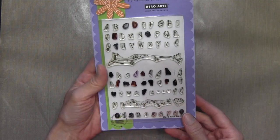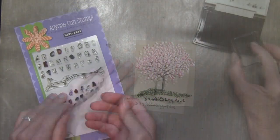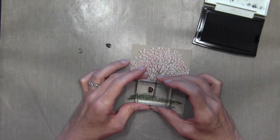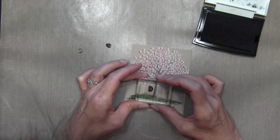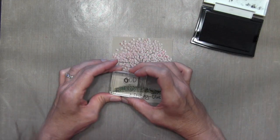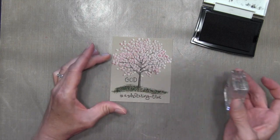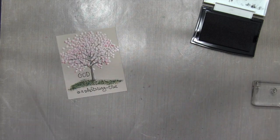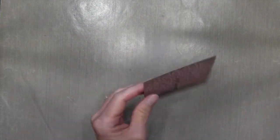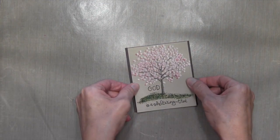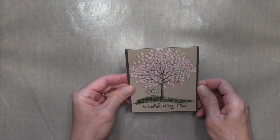All right, I'm using this Hero Arts Fanciful Swirl Alphabet Set. And I do not have a single stamp that has the word God in it. I checked everywhere, and I had nothing. So I'm just using my alphabet stamps. I used the zero instead of the O, because the O was really swirly. And I just thought it was a little disrespectful to have swirly O in there. So I used the zero.